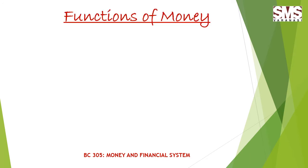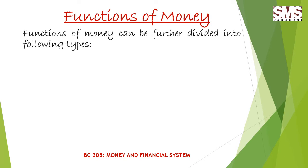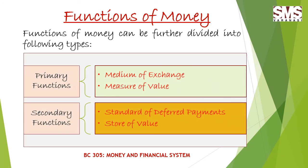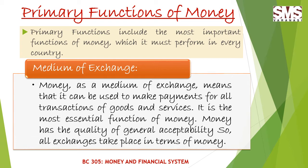The function of money can further be divided into the following two types. Under primary function, there are two main functions of money: first is medium of exchange, and the other primary function is measure of value. Secondary function involves standard of deferred payments and store of value. Now the primary function includes the most important function of money, and the first primary function is the medium of exchange.